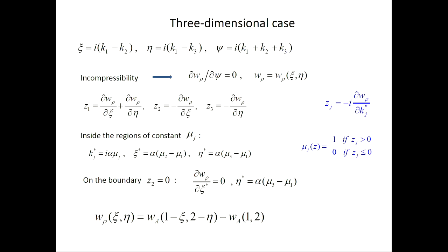In the three-dimensional case, everything becomes simpler because of incompressibility. We can make a change of variables such that one variable vanishes and everything depends on only two variables. Also, one of the Z components is definitely positive, one is definitely negative, so only one of them may change its sign.